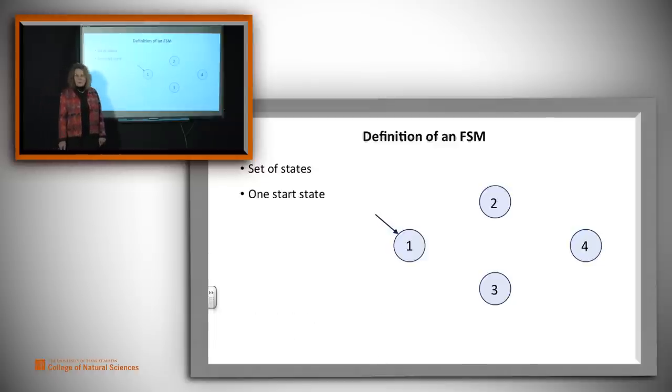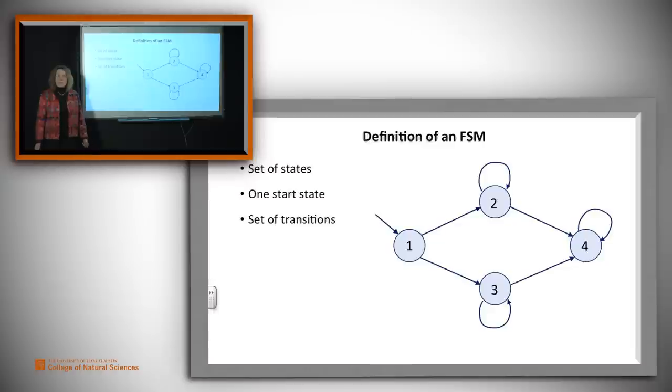One of them is special. It's the start state. There is a set of transitions that tell us how we move from one state to the next. And note that you can move from one state to itself or to a different state. And then, how do we tell which transitions to take? There's an input alphabet. You can think of it as symbols like A's and B's. You can think about it as events in the world. It's a discrete set of things. And we label the transitions.